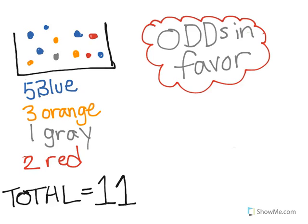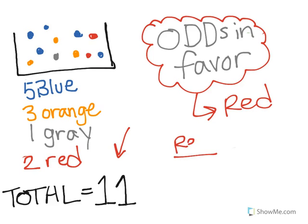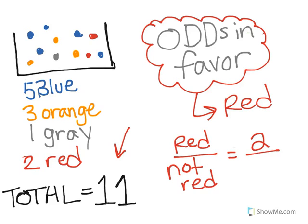Now if we're talking about odds in favor, notice how the box didn't change — we still have the total and we're going to need it, but it's not necessarily going to be on the bottom. Let's say we're trying to find the odds in favor of red. It would be set up as however many are red on the top, because it's in favor.